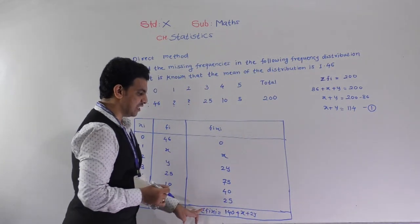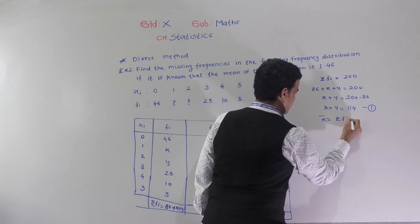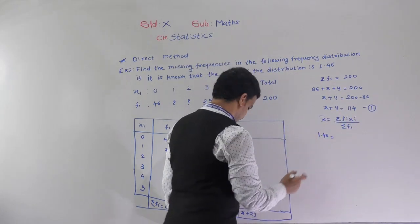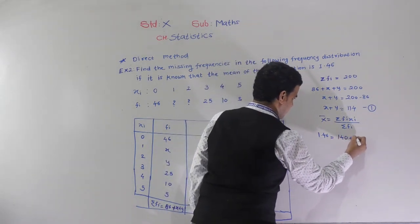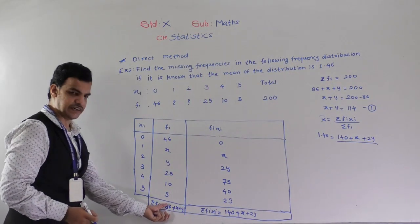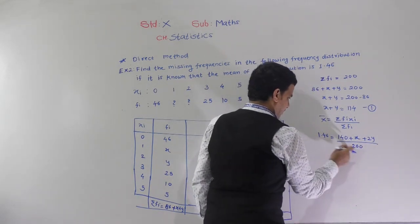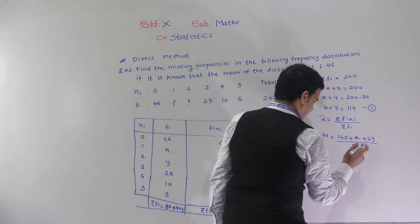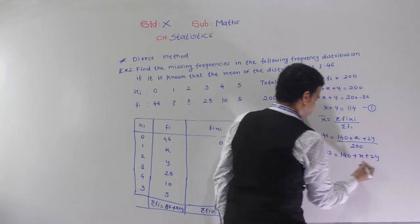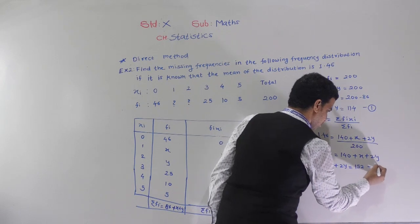Now using the mean we get equation 2. X-bar is given as 1.46. So x-bar equals summation fixi upon summation fi: 1.46 equals 140 plus x plus 2y divided by 200. Multiplying: 1.46 into 200 is 292 equals 140 plus x plus 2y. Shifting terms, x plus 2y equals 152. This is equation 2.